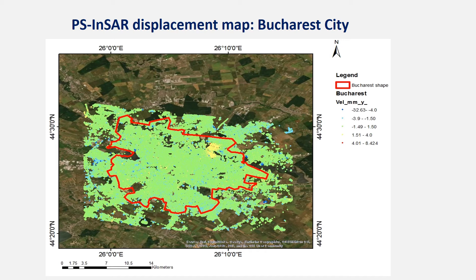The most common pattern is stability with values between minus 0.5 mm and 1.5 mm. The results indicate a slight uplift up to 4 mm per year along the Dâmbovița river, while in the areas located in the north-east of the city centre and in the former wetlands, the subsidence is up to minus 8 mm per year. The new residential areas in the southern and western parts are quite stable.